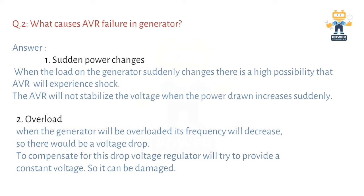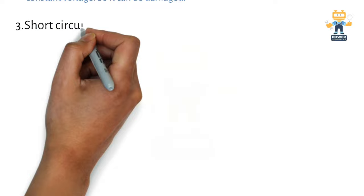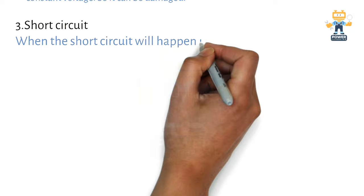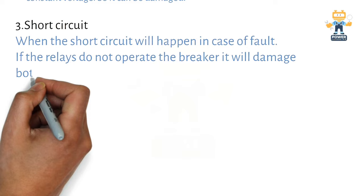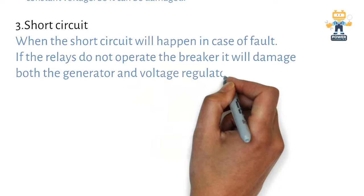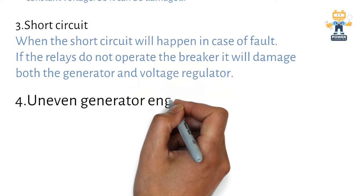Cause number three: Short circuit. Whenever in your load side or in your generator there is a short circuit, it will also create problems for your AVR. When the short circuit happens, even in this case of fault, if the relay does not operate the breaker, it will damage both the generator and voltage regulator. Make sure to avoid any short circuits.